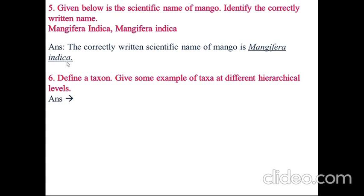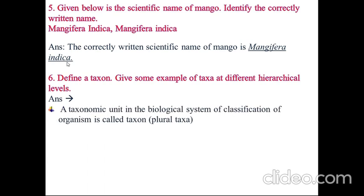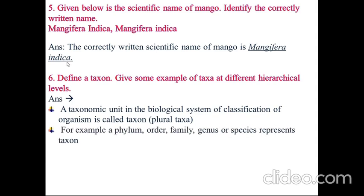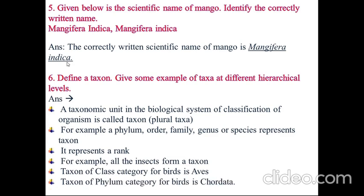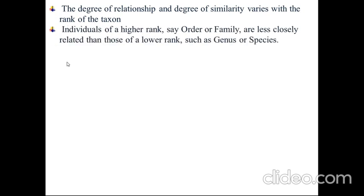Define a taxon and give examples of taxa at different hierarchical levels. A taxonomic unit in the biological system of classification of organisms is called taxon, in plural taxa. For example, a phylum, order, family, genus, or species represents a taxon. It represents a rank. For example, all the insects form a taxon. Taxon of class category for birds is Aves. Taxon of phylum category for birds is Chordata. The degree of relationship and similarity varies with the rank of the taxon. Individuals of a higher rank, say order or family, are less closely related than those of a lower rank, such as genus or species.